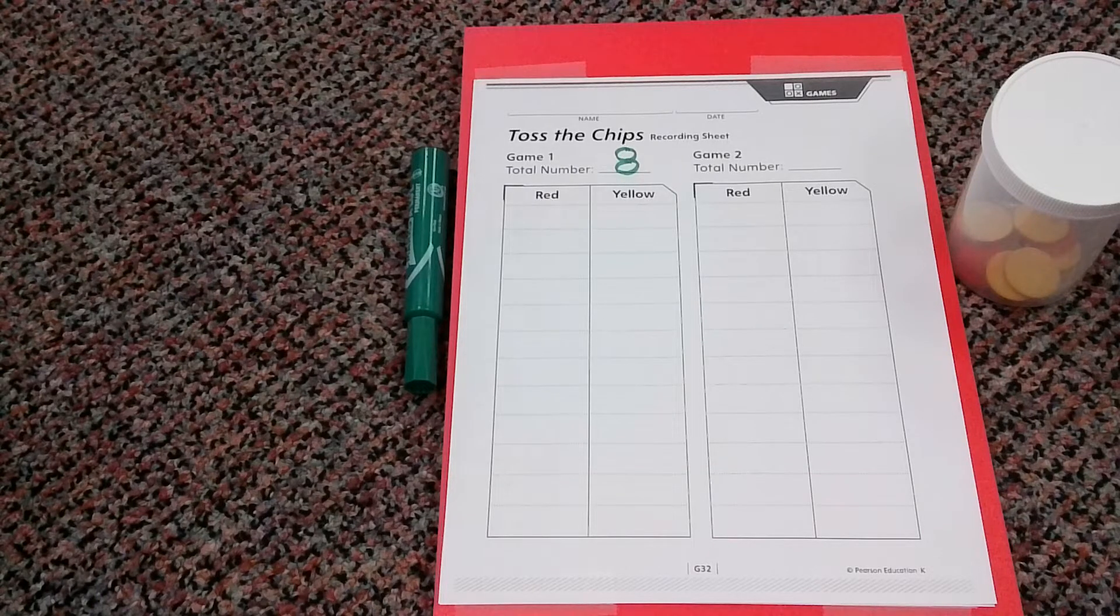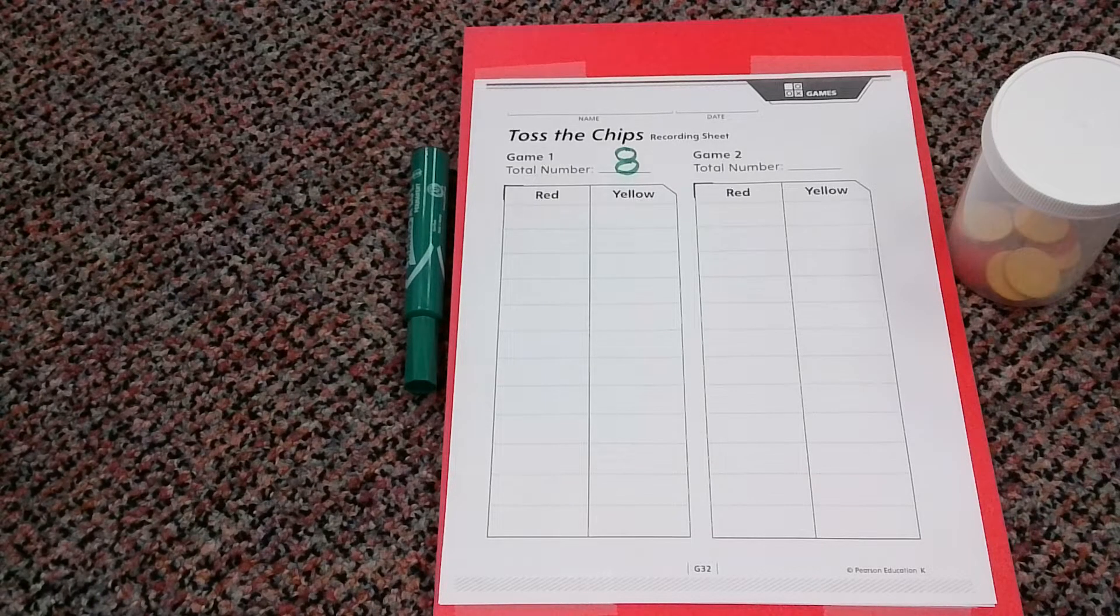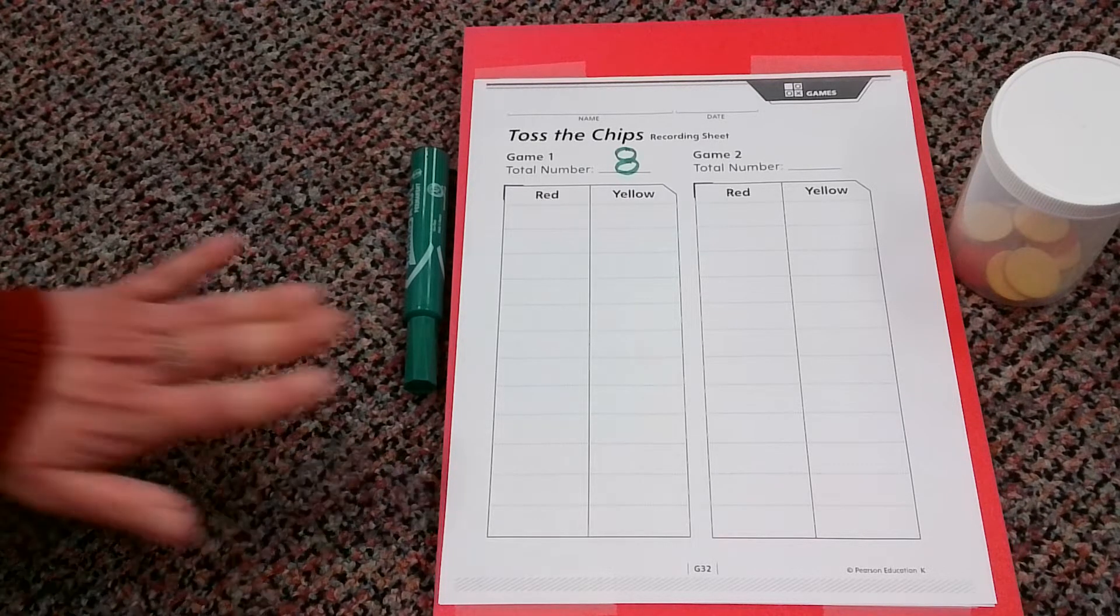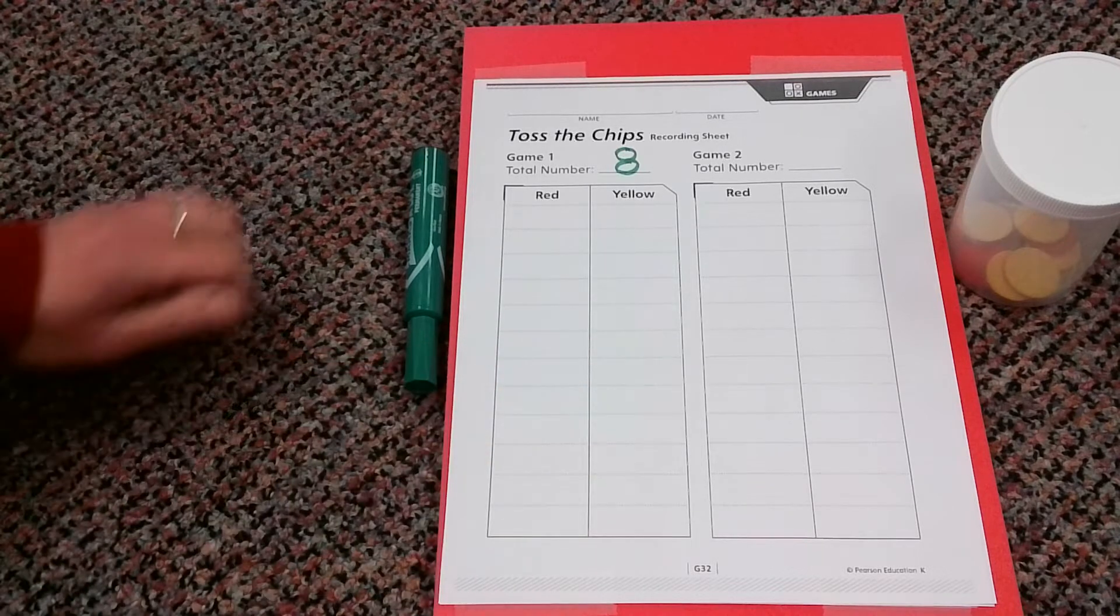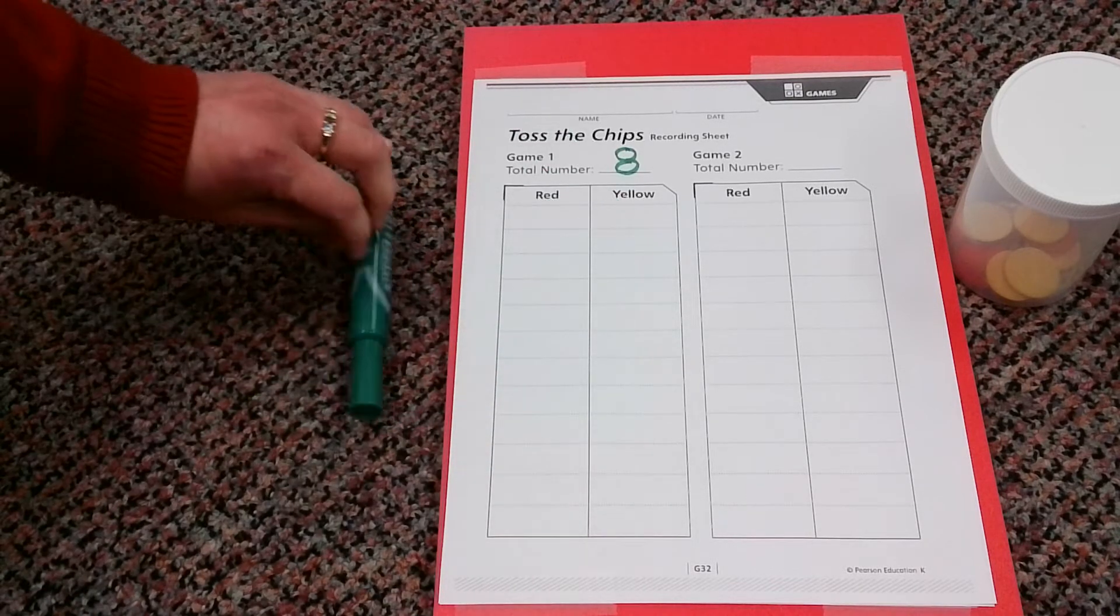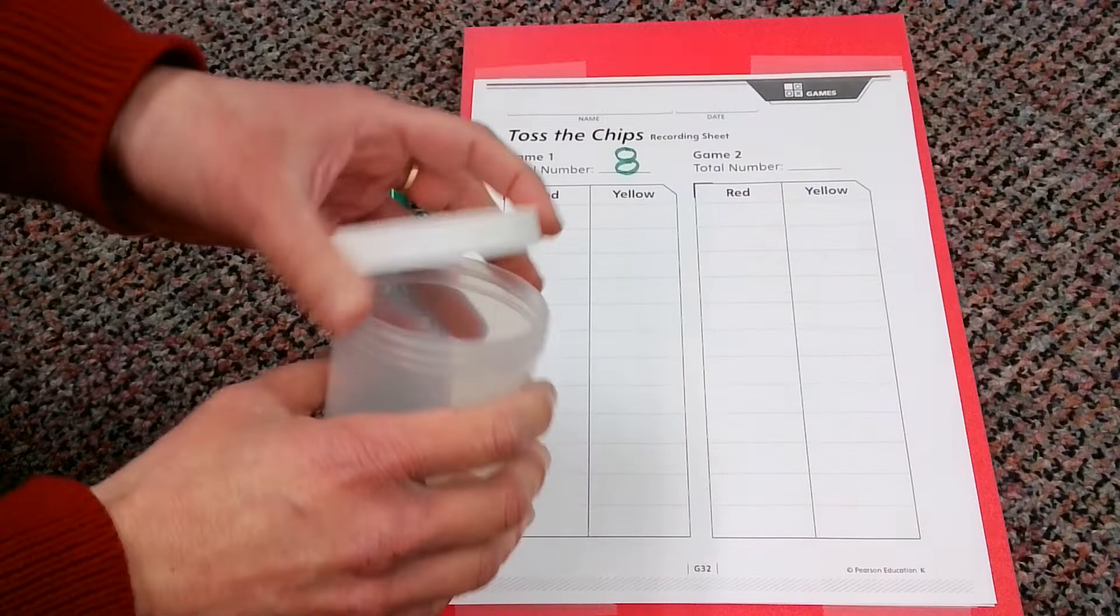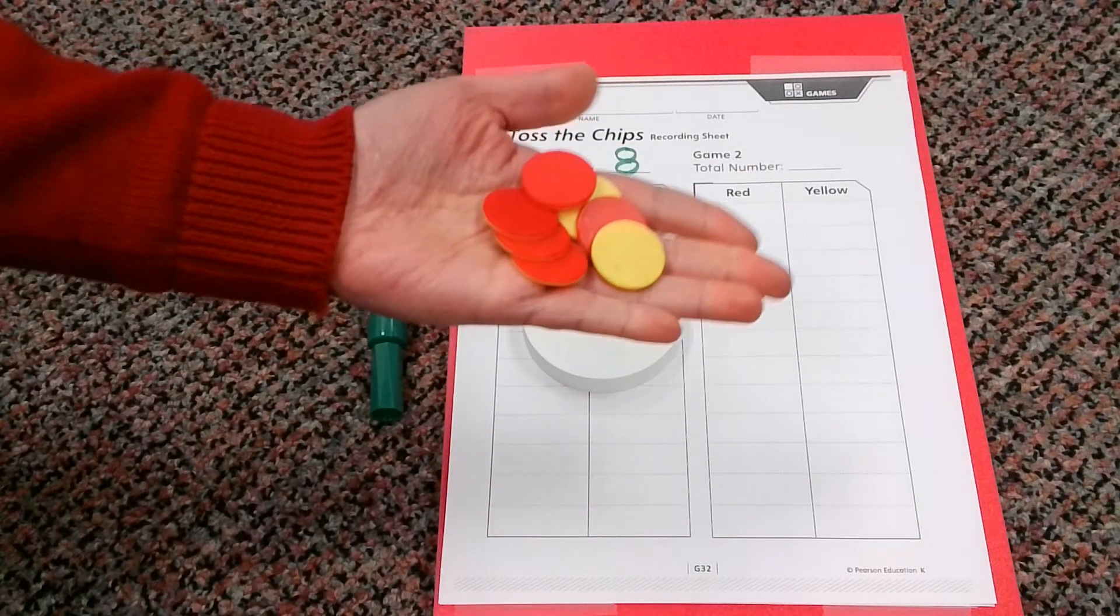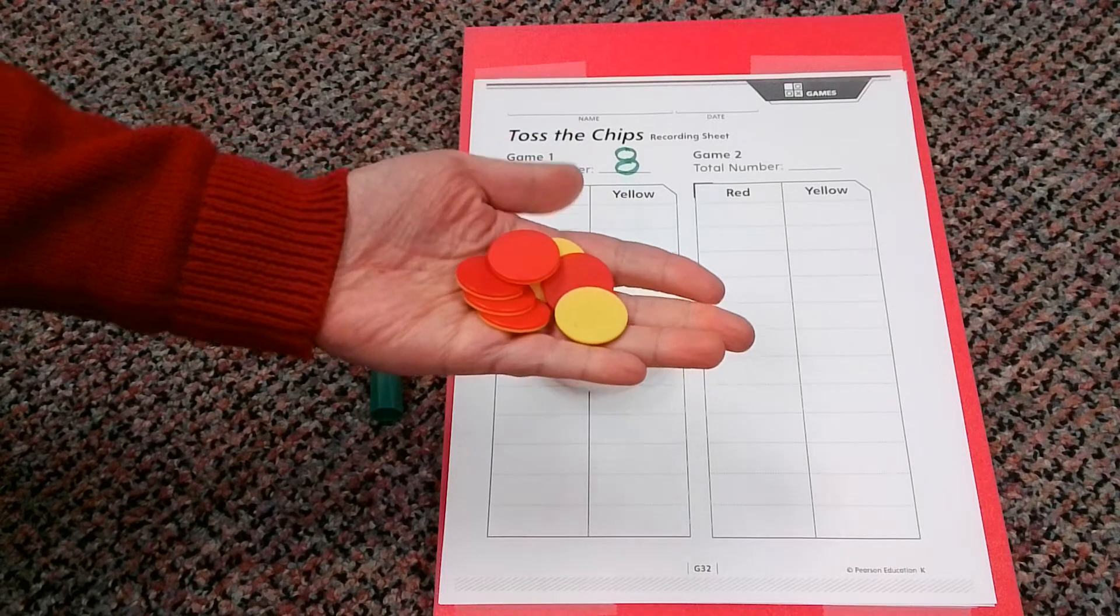Hello friends, it's Mrs. Gorski back, and today what we're going to be doing is a little game called Toss the Chips. So let me tell you exactly what we're going to need. We're going to need a recording sheet, something to write with, and of course our chips that we're going to toss, which really are yellow and red counters.